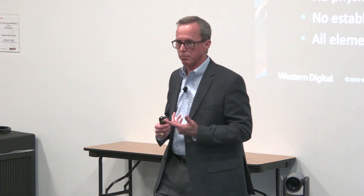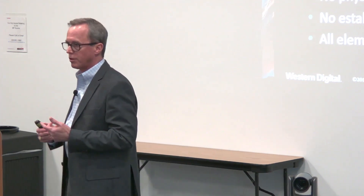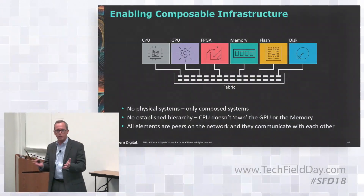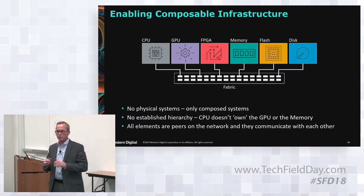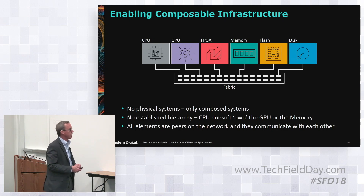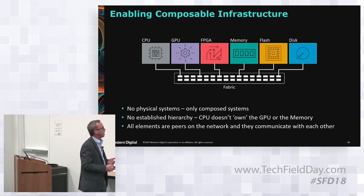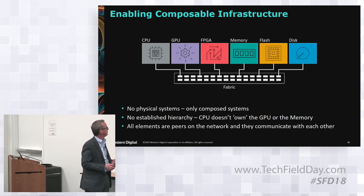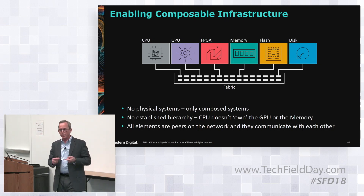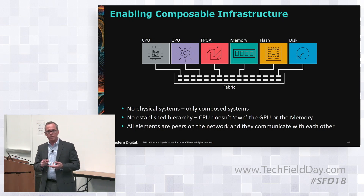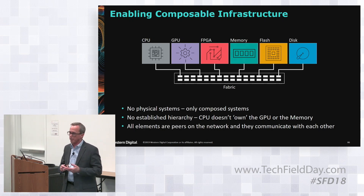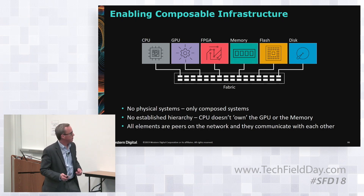The whole idea is that you no longer have physical systems — traditional 1U, 2U, whatever-U physical systems with self-contained resources. We want to break those apart, and that's what NVMe over Fabric is allowing us to do. We can do it with CPU and different storage devices, and over time with memory and accelerators as well.